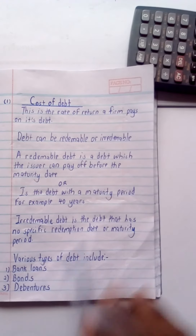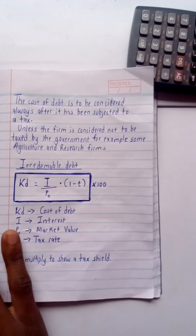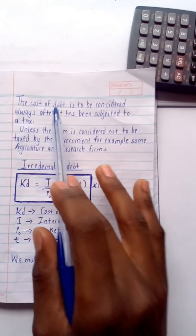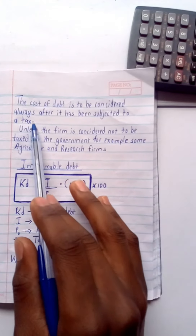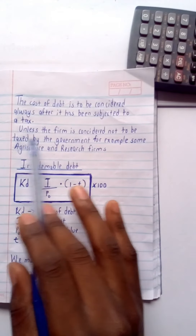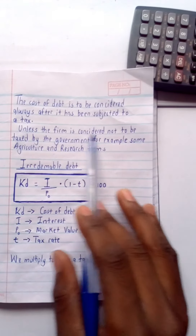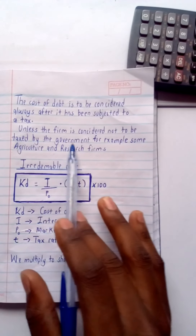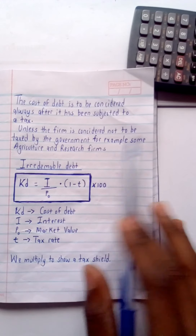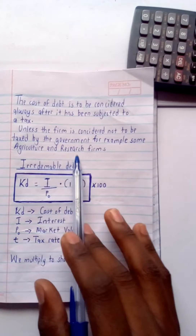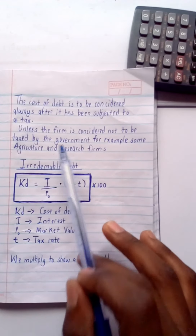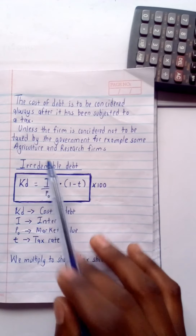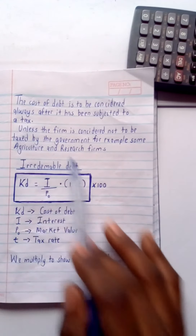The cost of debt is always to be considered after it has been subjected to tax. Note that unless the firm is considered not to be taxed by the government — for example, some agriculture and research firms — you are always going to subject the debt to tax.